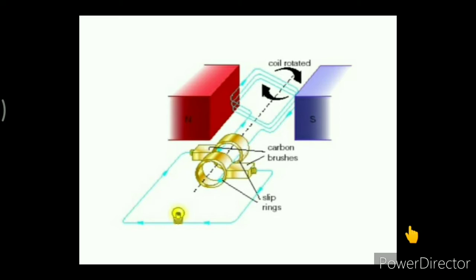The difference between an AC generator and a DC motor is that the DC motor uses a split ring commutator, which reverses the current direction in the coil every half a turn and allows the coil to always turn in the clockwise direction.